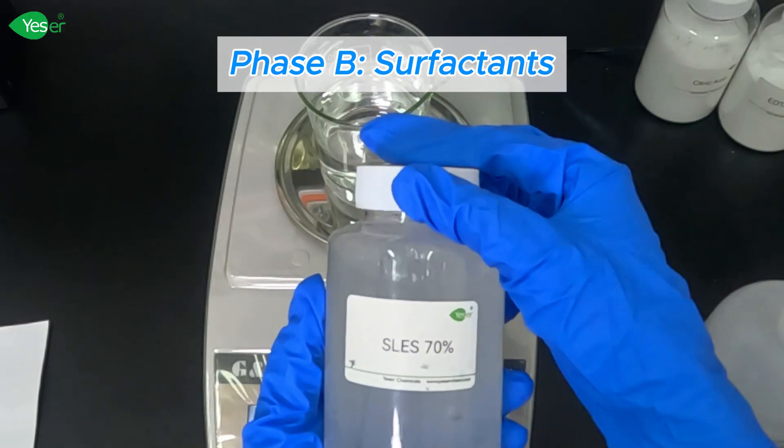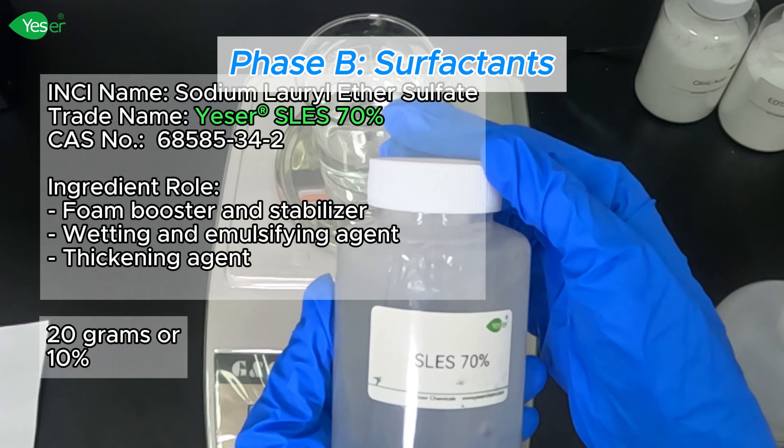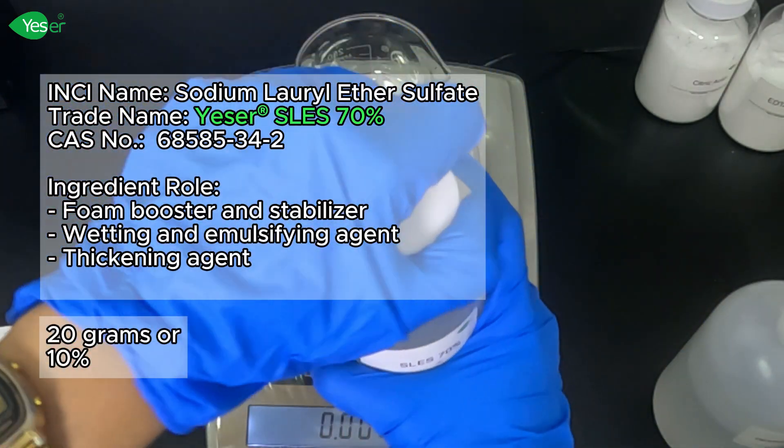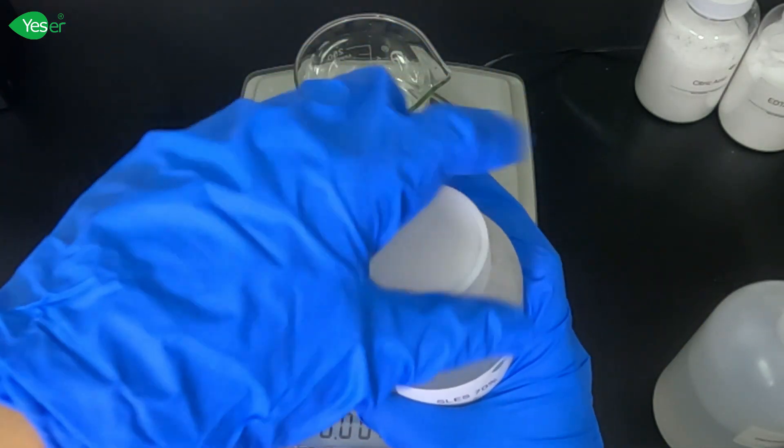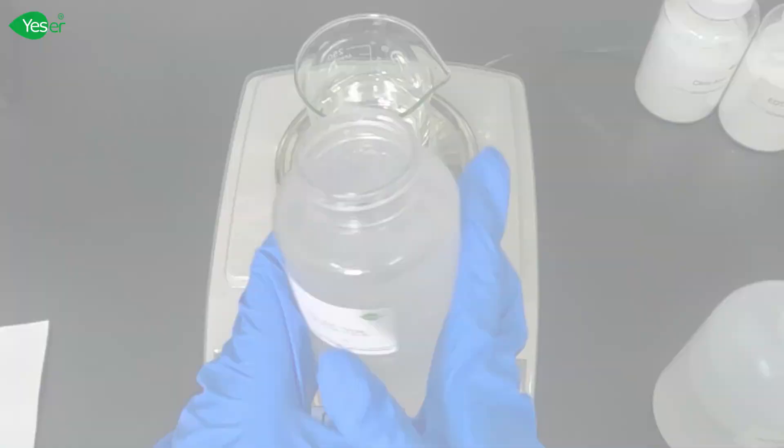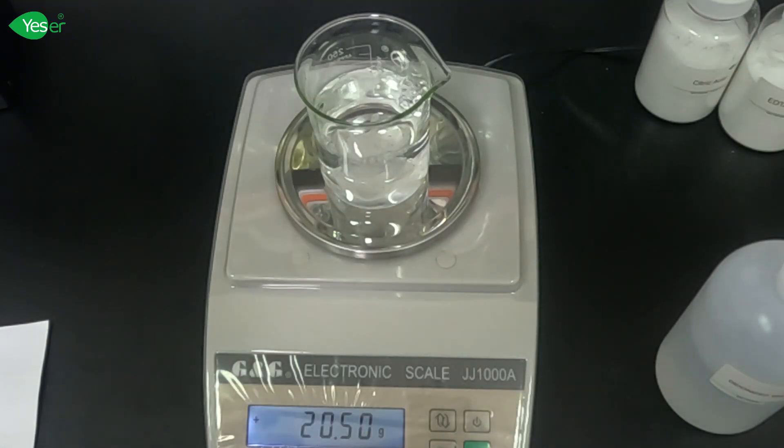Let's add our primary surfactant, which is SLES at 70%. Let's add about 20 grams of this, or 10% for our formula. Let's stir this in an overhead stir until it is completely dissolved in the solution.